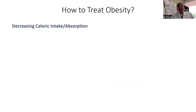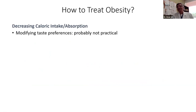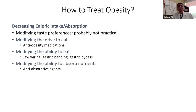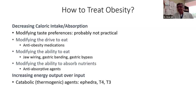How can we treat obesity? We can decrease caloric intake by modifying taste preferences, use medications to suppress the drive to eat, or modify the ability to eat through procedures like banding or bypassing the stomach. We can also modify the ability to absorb nutrients with anti-absorptive agents or surgeries. Anti-obesity medications will be discussed — until a couple of years ago, none of them were completely safe or completely effective, but in the last two years we do have some new medications that seem to help.